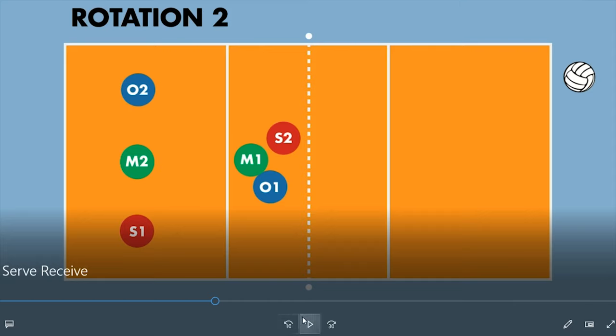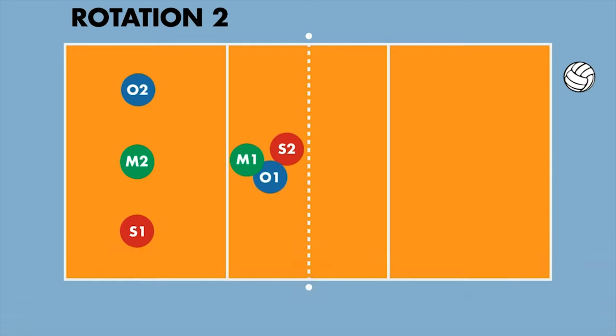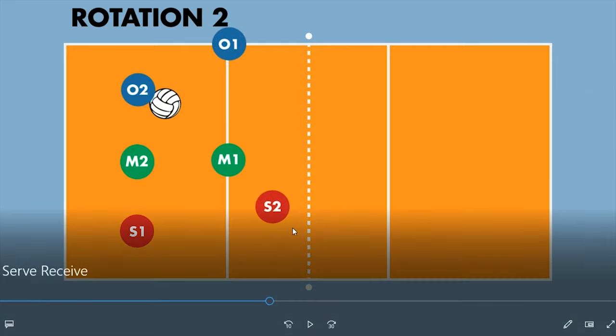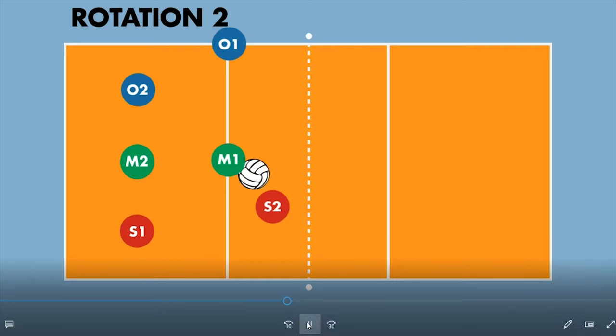You can set it up however you want. So the setter is going to cross over here. The outside is going to go all the way to the outside. And the middle is going to hang out right here. So let's see what that looks like. There we go. See the middle only had to take a couple steps. Setter moved over here. Outside all the way over here. And then the hitters are set up. We're going to go back to where we were and rotate.